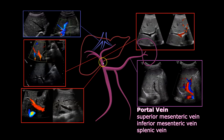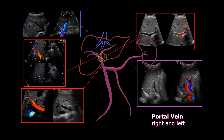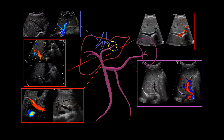Those three meet to become the main portal vein, which then bifurcates into right and left. When we're doing a portal vein Doppler, we focus on the main portal vein, Doppler the right portal vein, and Doppler the left portal vein. There are a lot of branches, which I will go over, but you don't need to Doppler those. As long as the main and bifurcation are normal, you're good to go.